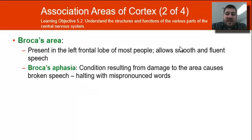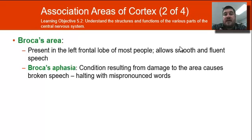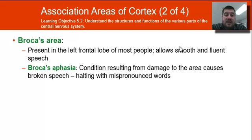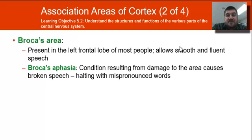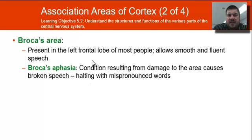Broca's area is one association area in the cortex. It's present in the left frontal lobe of most right-handed people, and it allows smooth and fluent speech. However, if you get damage to Broca's area — called Broca's aphasia — it causes broken speech. You can understand speech just fine with Broca's aphasia, but you can't speak and will halt with mispronounced words.